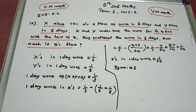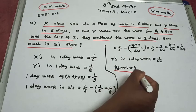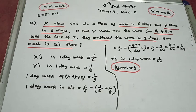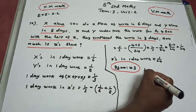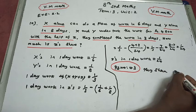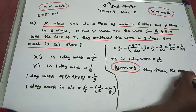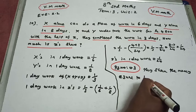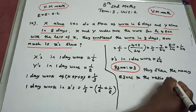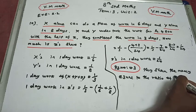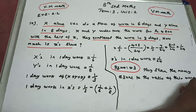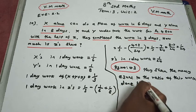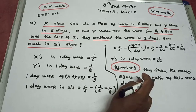Now we find the ratio in which their wages will be distributed. They share the money equal to the ratio of the work done per day — that is, the ratio of their individual 1-day work values.